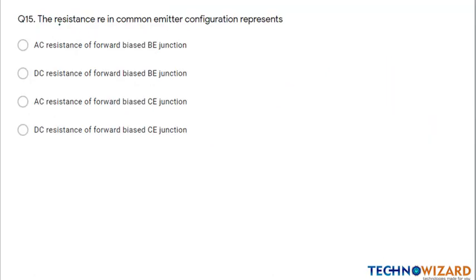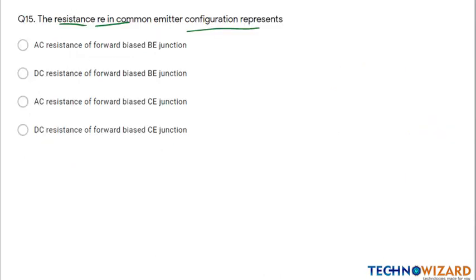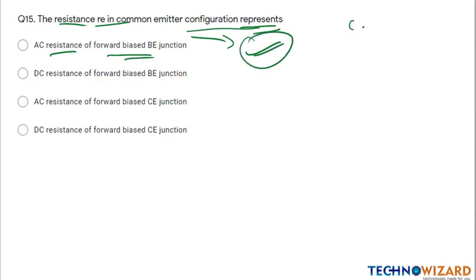Question number fifteen: the resistance RE in a common emitter configuration represents the AC resistance of the forward biased BE junction. The common emitter configuration is used to maintain AC stability in an amplifier.